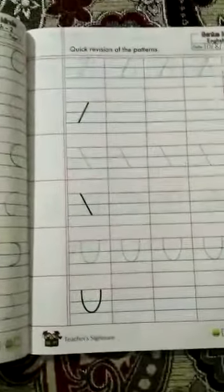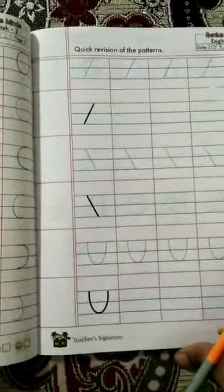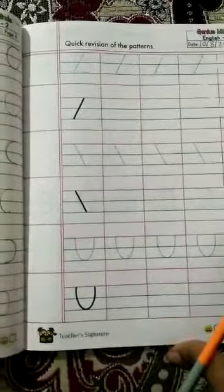Yes, today's date is 10, so write here 10, 8, 2020. Okay, so see students, what to do here. Here is quick revision of the patterns.